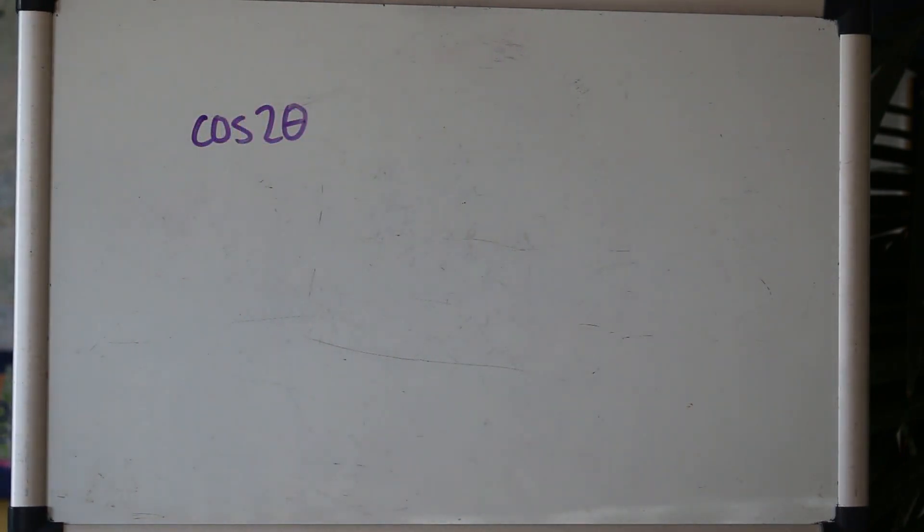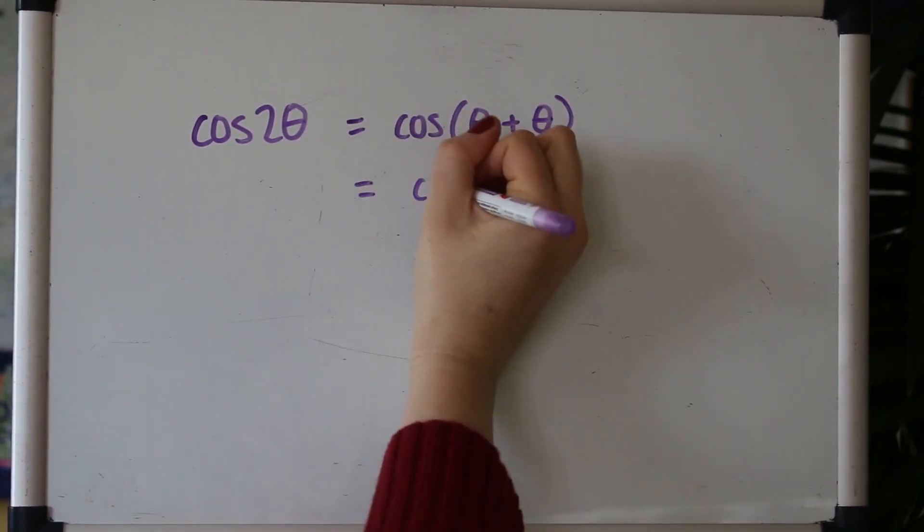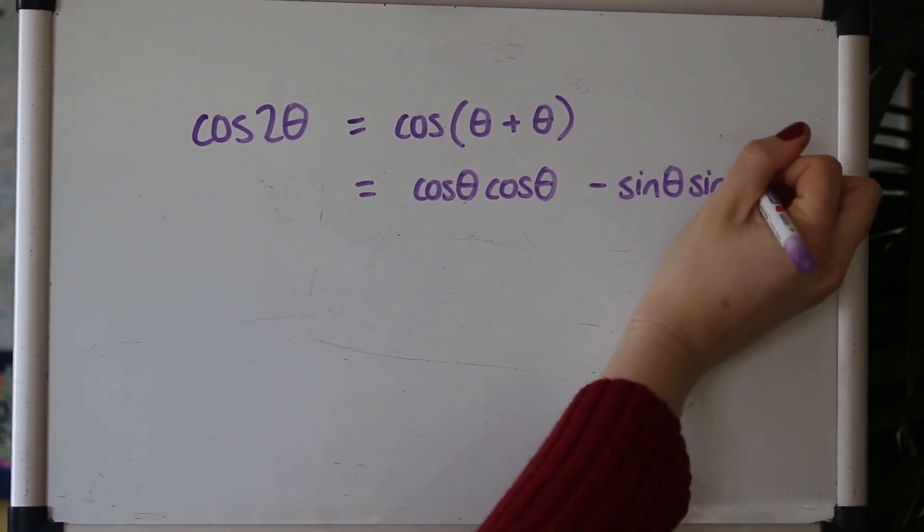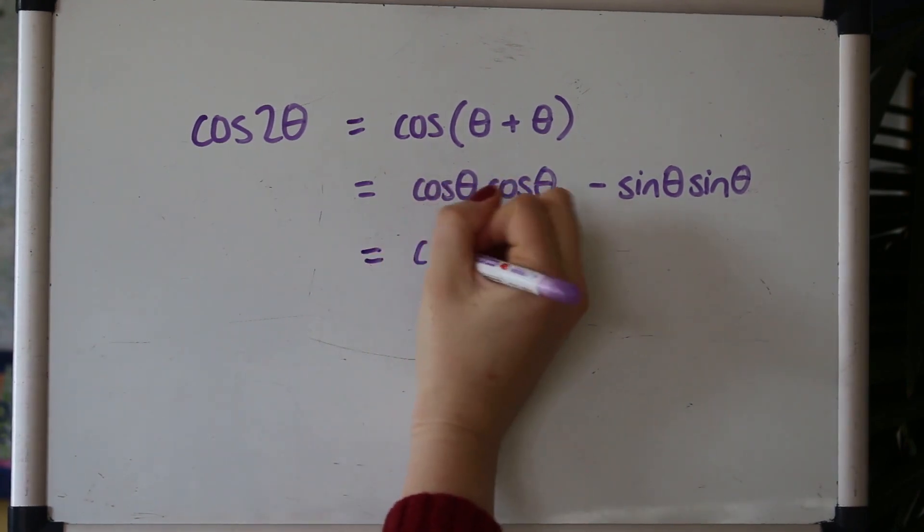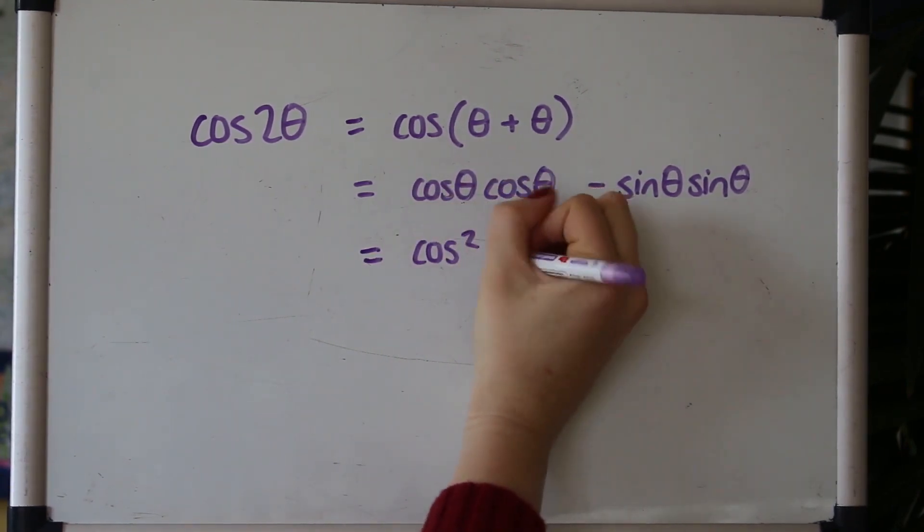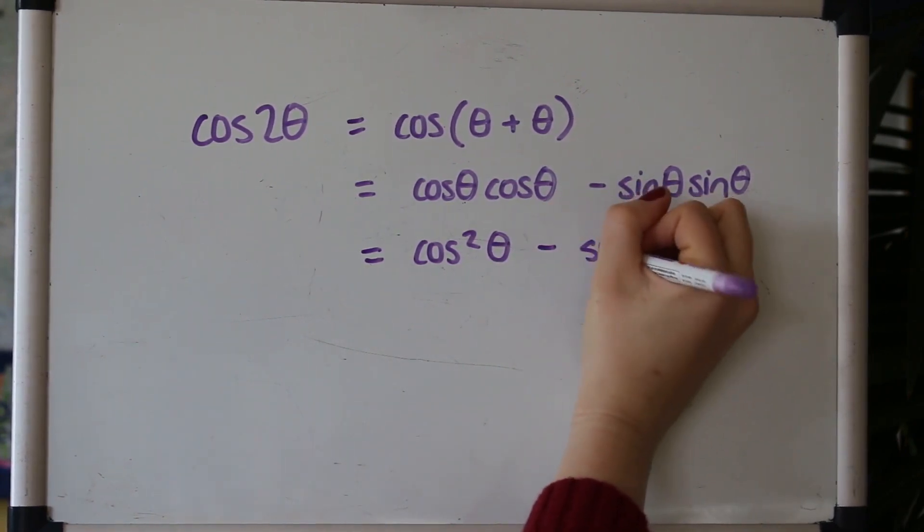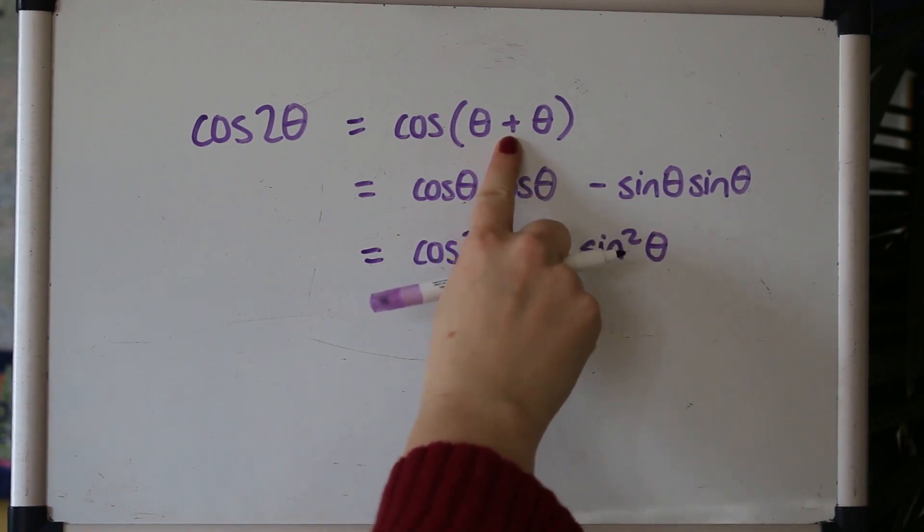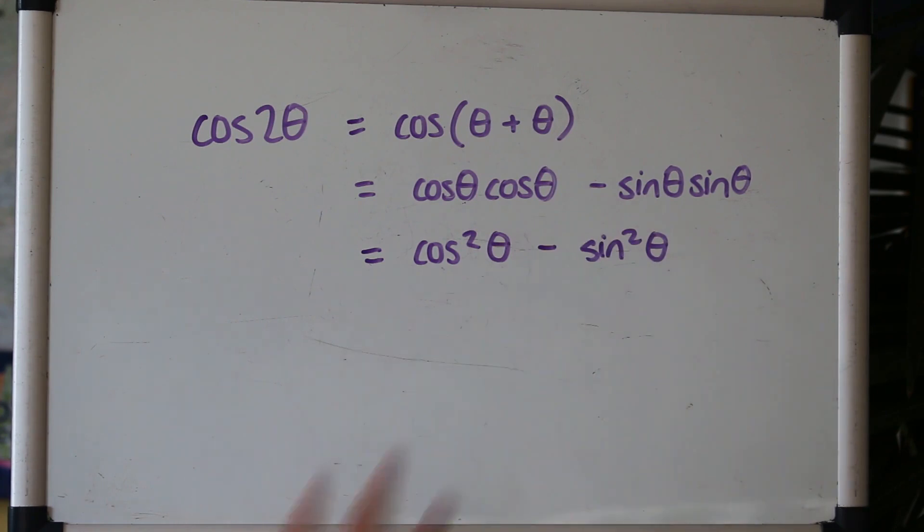We'll do the same thing with cos now. cosθ times cosθ is cos²θ. We always write the squared before the theta for some reason. And the other thing to be aware of is that when it's an addition formulae for cos it switches the sign to minus. So that is one of the versions of the double angle formulae.